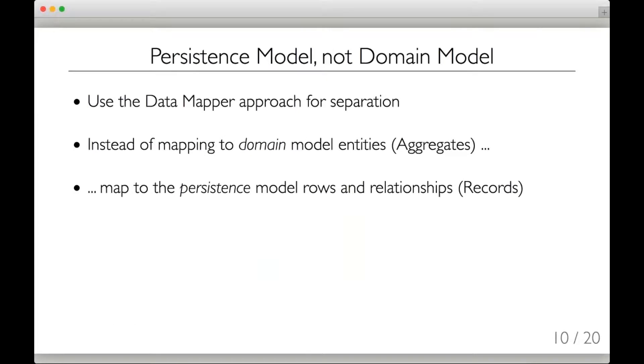What we want to do is use the Data Mapper approach when it comes to separating the persistence mechanism and the data objects. But instead of having the Data Mapper map to a model of the business domain, what we want it to do is map to a model of the persistence system. That is, the mapper should not return things like domain-driven design entities and aggregates and value objects. What we have it do is have it return an object that maps to a table row and to the related rows in the database. The mapper emits persistence model objects, not domain model objects.